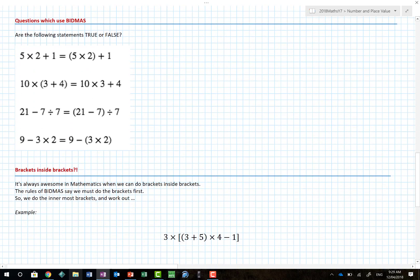So here are some questions which use BIDMAS. Are the following statements true or false? Is 5 × 2 + 1 the same as (5 × 2) + 1? Well if we're going to use BIDMAS, let's just write it here. Brackets, indices, division, multiplication, addition and subtraction. So looking at this side first, 5 × 2 + 1. Brackets no, indices no, division no, multiplication yes. So 5 × 2 is 10, and we add the 1 on. Here we've got brackets. That tells us to do the 5 × 2 plus 1. And yes, 10 + 1 is equal to 10 + 1. Thank you very much.